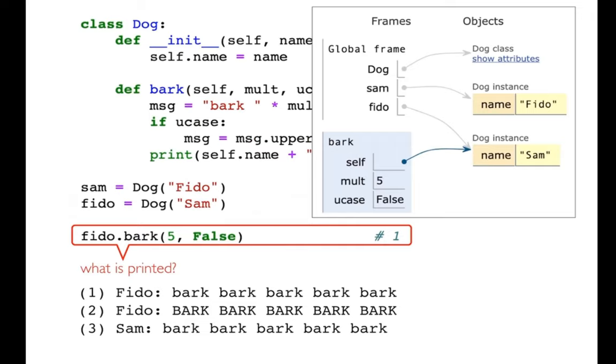If you were running this in Python Tutor, you would see something like this at the moment that we enter the bark method. You'll see that the self variable inside of the bark method is the same as fido in the global namespace because we said fido.bark. And so then of course it's going to get the name Sam there.